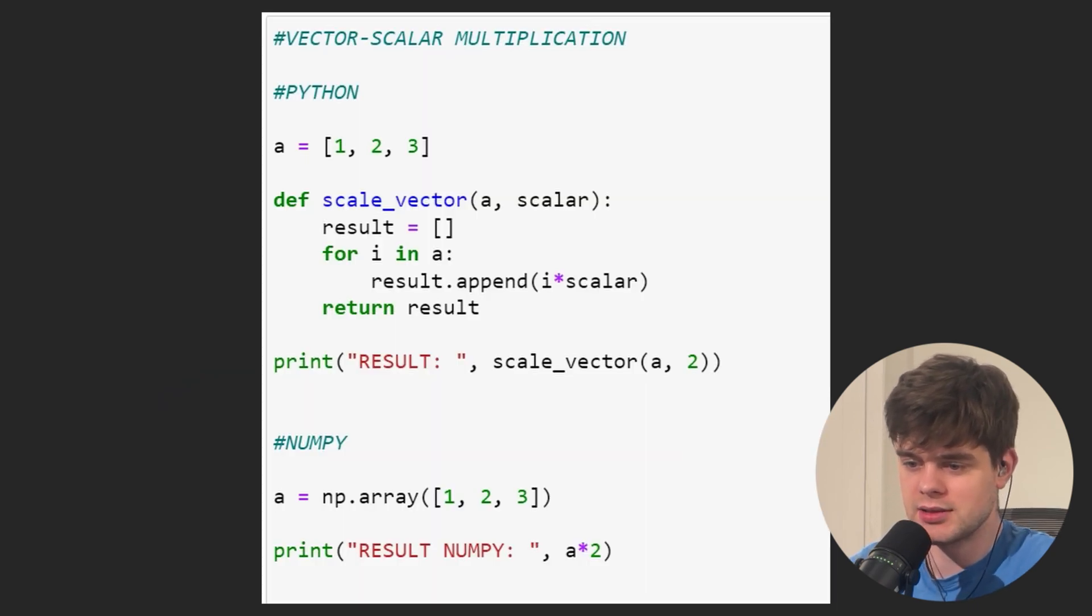This is how it is done in pure Python. We iterate through an array, multiply each element by a given variable, and this is using NumPy. Here we can use the multiplication operator, also known as asterisk.